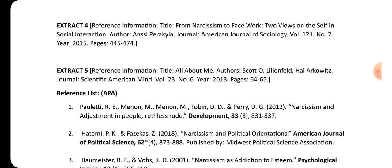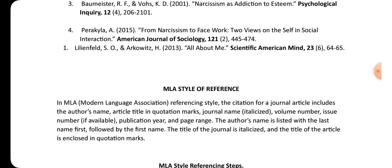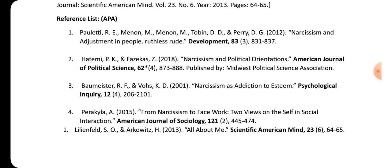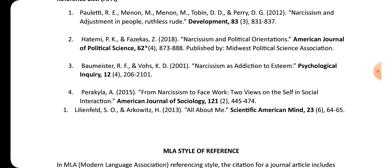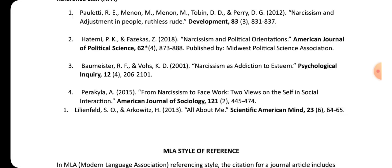Please do Extract Four yourself — take a screenshot of the reference information and drop your answer in the comment section. I will reply to you. In referencing, once you understand these basic things, it won't be difficult. The key features are: author name, publication year, article title, journal title, volume and issue number, and page range.